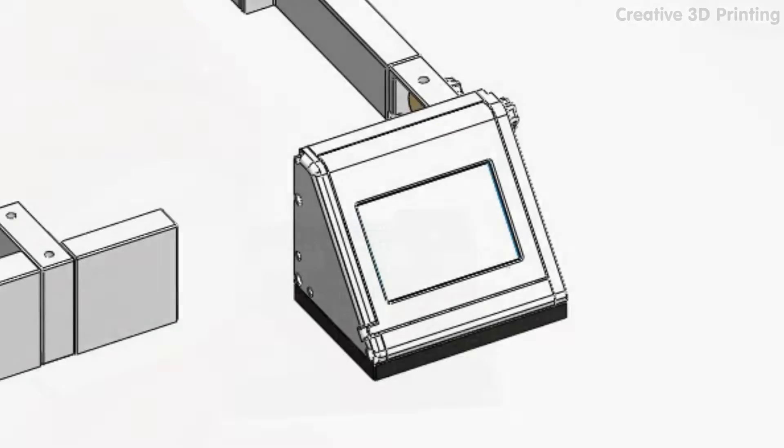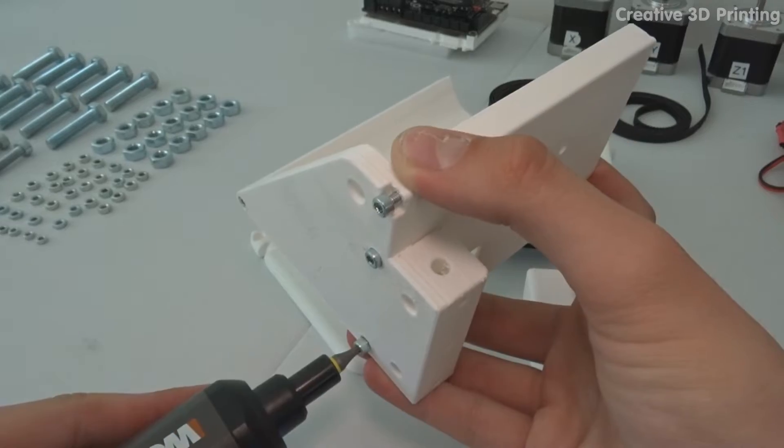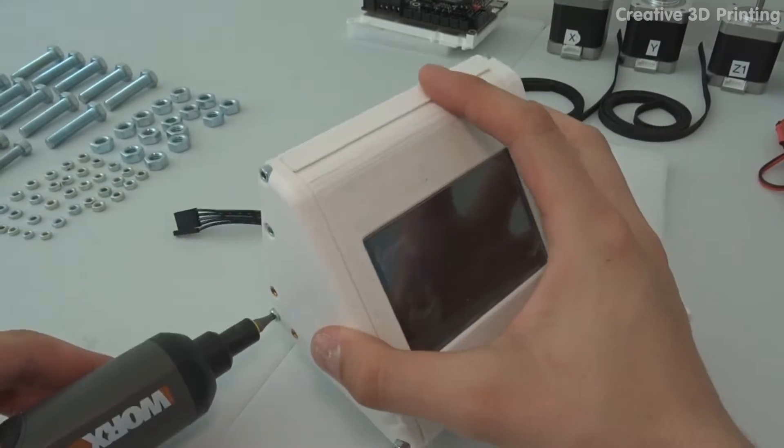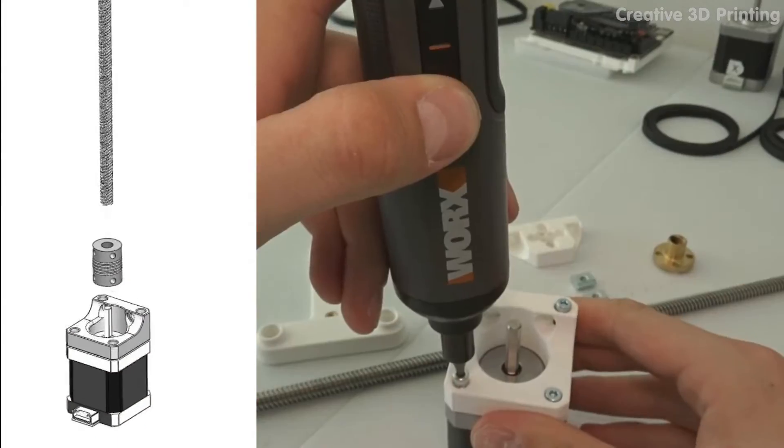I'll start with the first part of the plating and that is the rotating holder that houses the touchscreen, and continue with the Z stepper motor attachments.